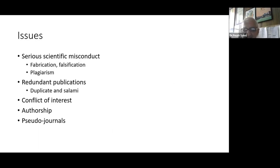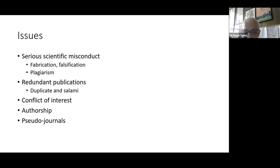Serious misconduct in science occurs when there is fabrication and falsification of data. This could happen while you're doing research — fudging data — or you could just sit at a desk and produce something that didn't exist. Serious scientific misconduct also includes plagiarism.